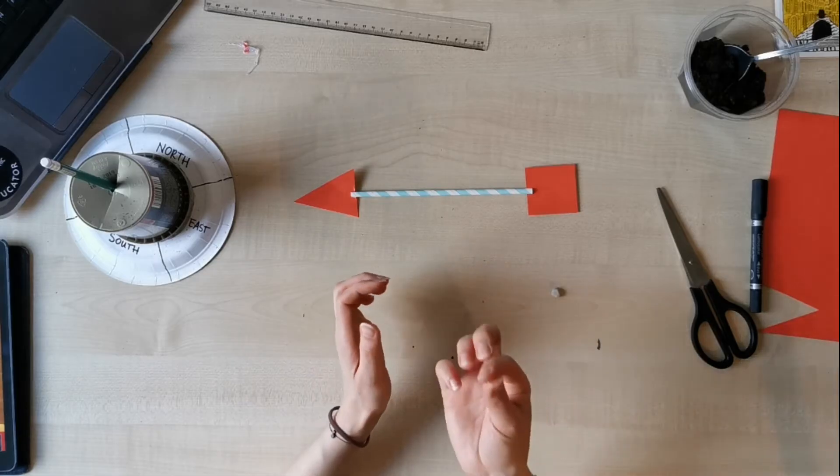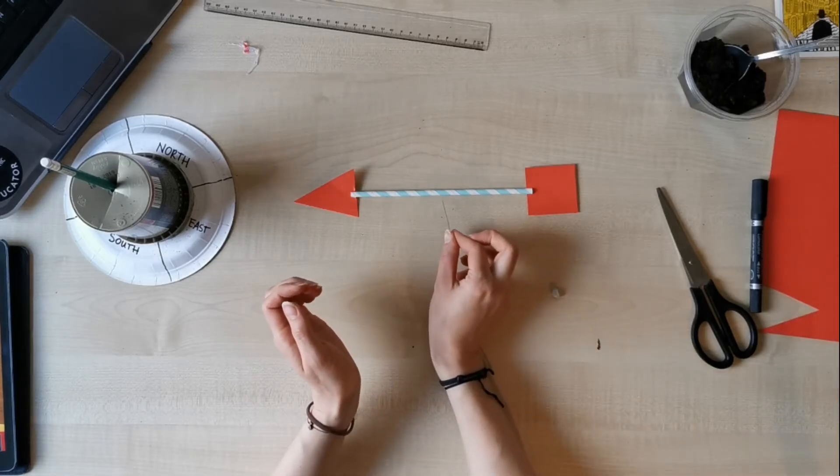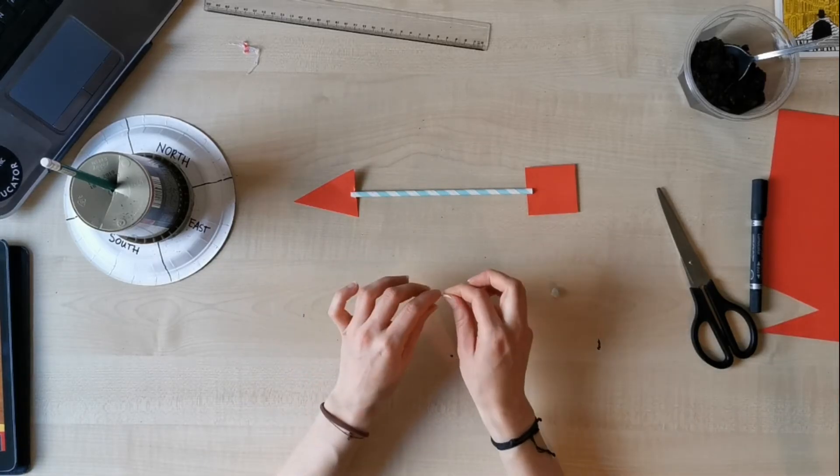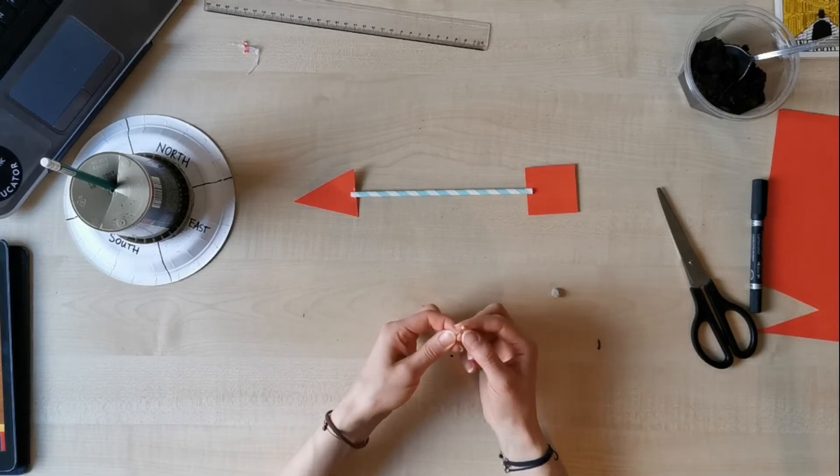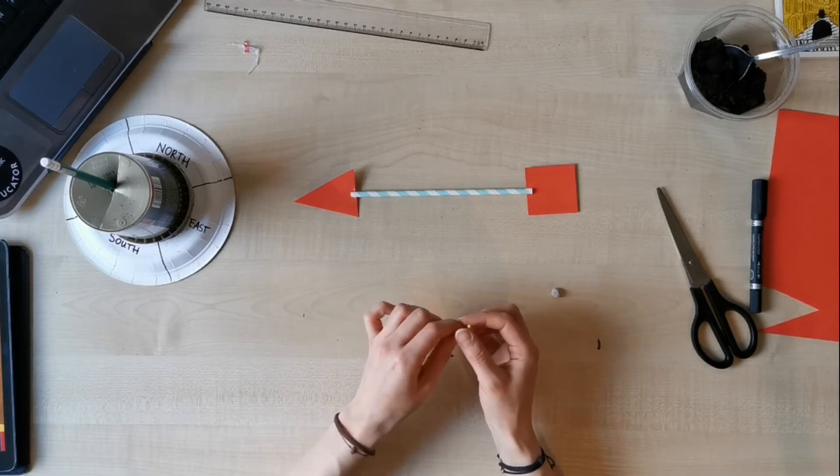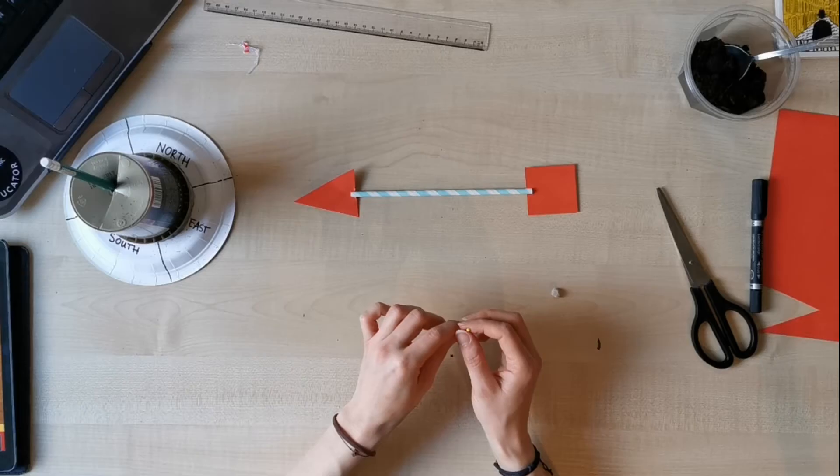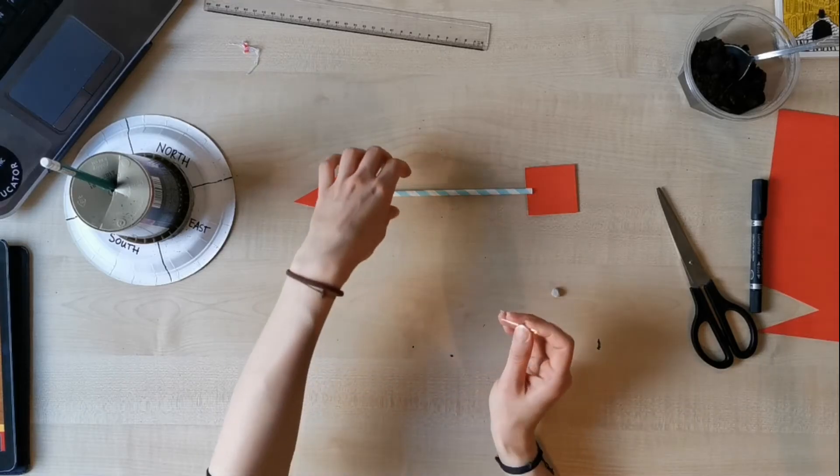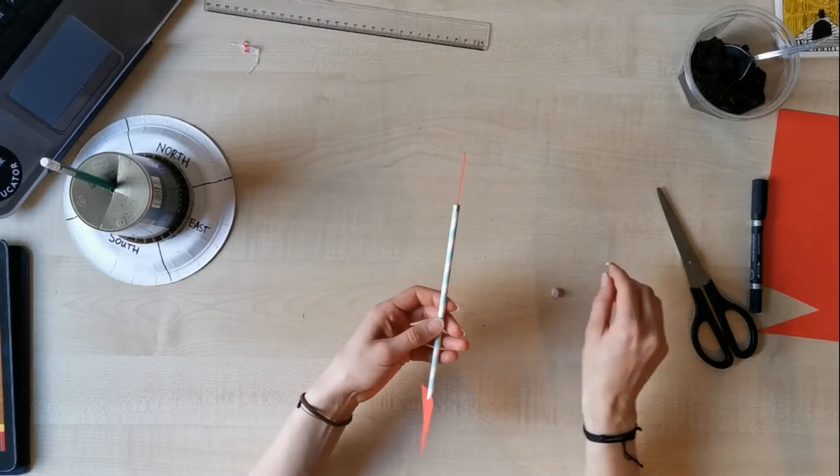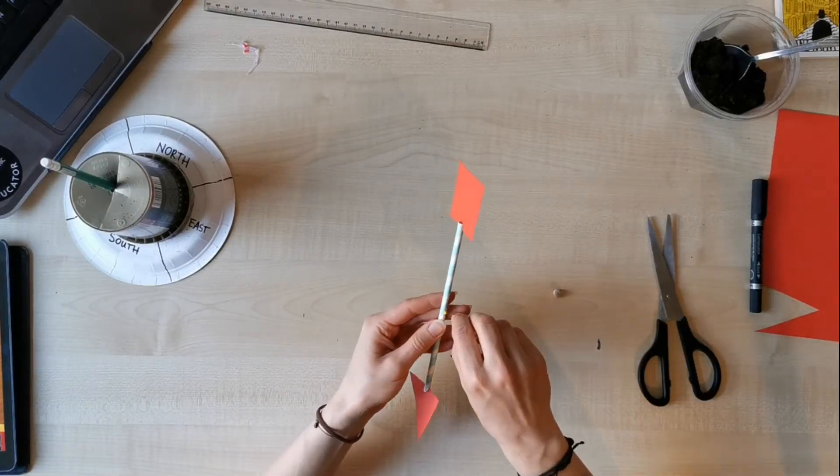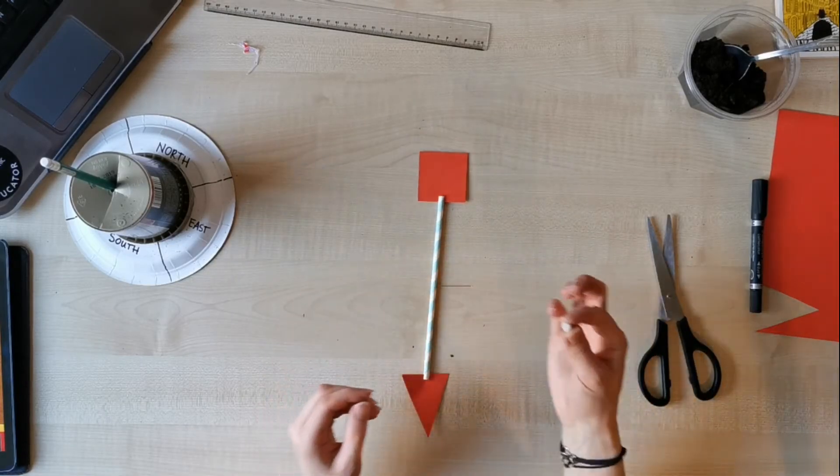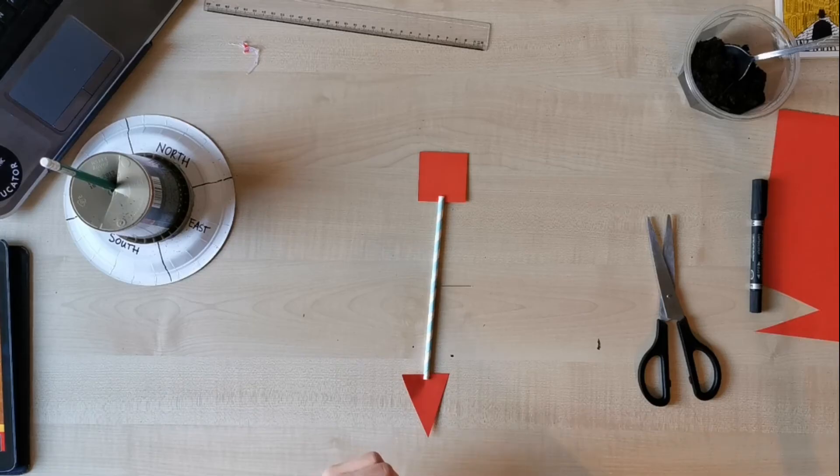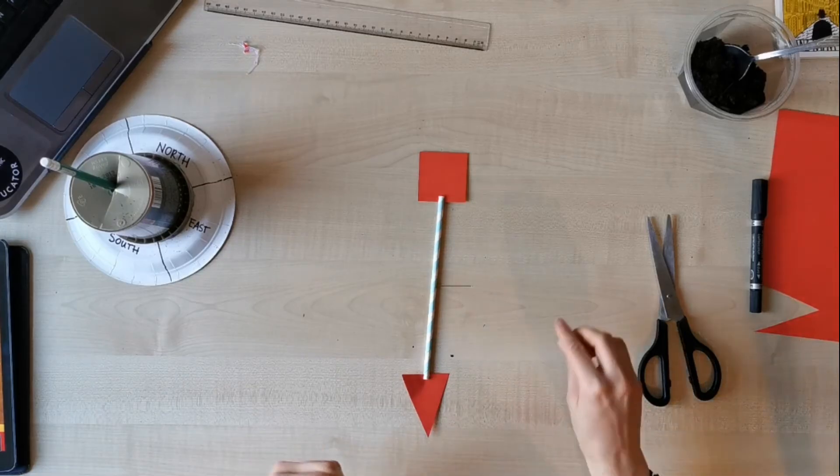Because we have to push the pin through the center of the straw. My pin is quite big at the end. So I'm going to try to make a hole first and then to put it inside. And I'm going to use this to make it stick a little bit better.